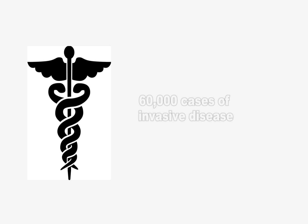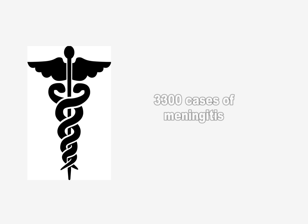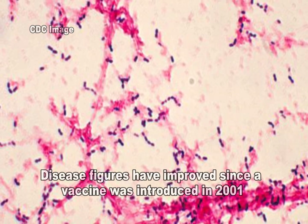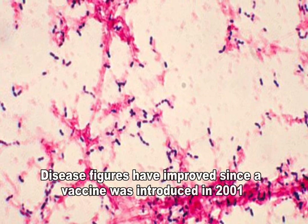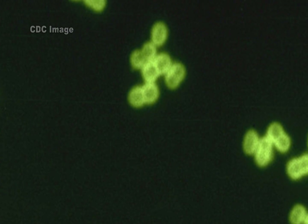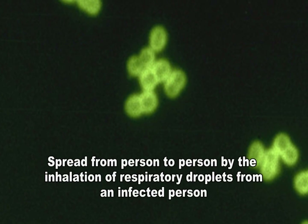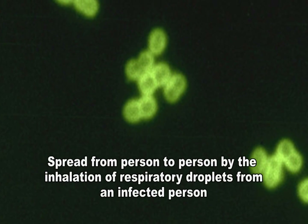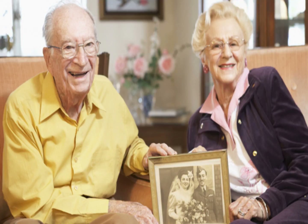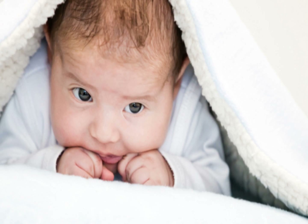Until 2000, Streptococcus pneumoniae infections caused 100,000 to 135,000 hospitalizations for pneumonia, six million cases of ear infections, and 60,000 cases of invasive disease including 3,300 cases of meningitis. Disease figures have improved since a pneumococcal conjugate vaccine was introduced in 2001. Streptococcus pneumoniae is spread from person to person by the inhalation of respiratory droplets from an infected person.